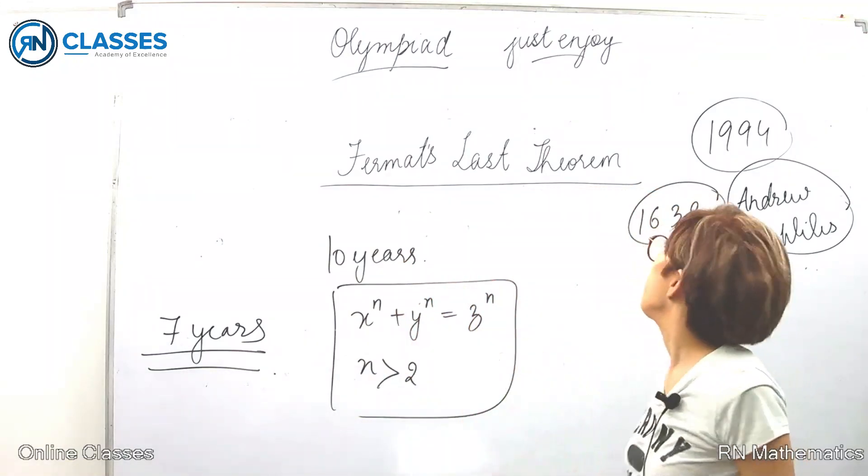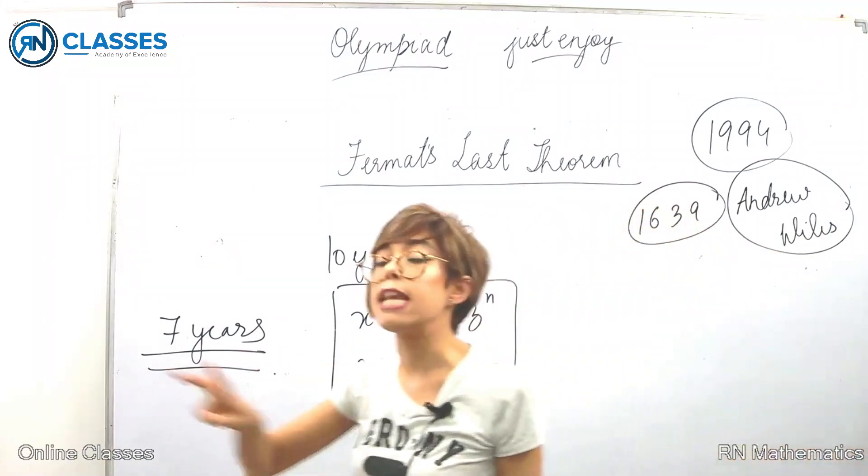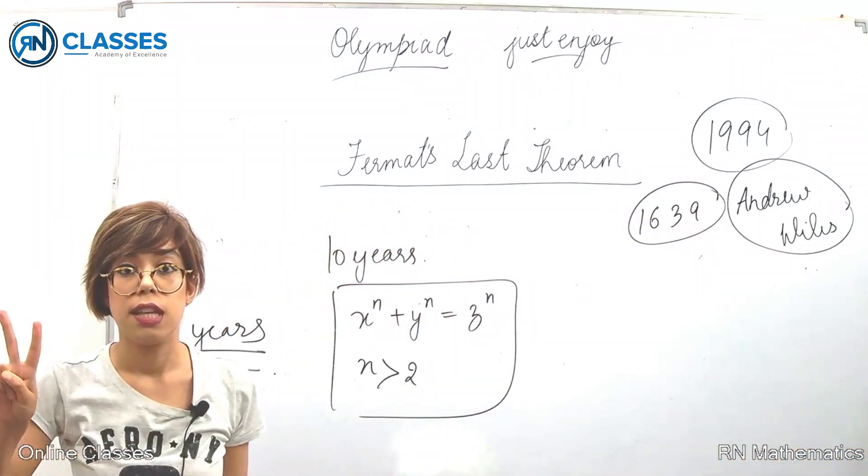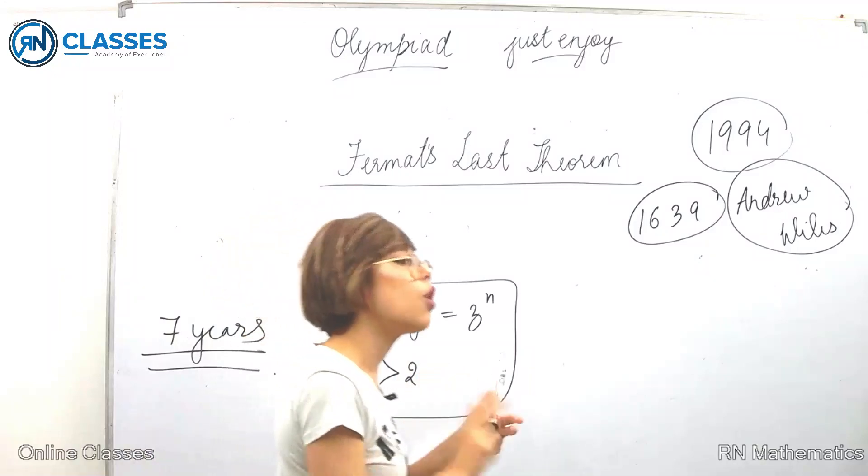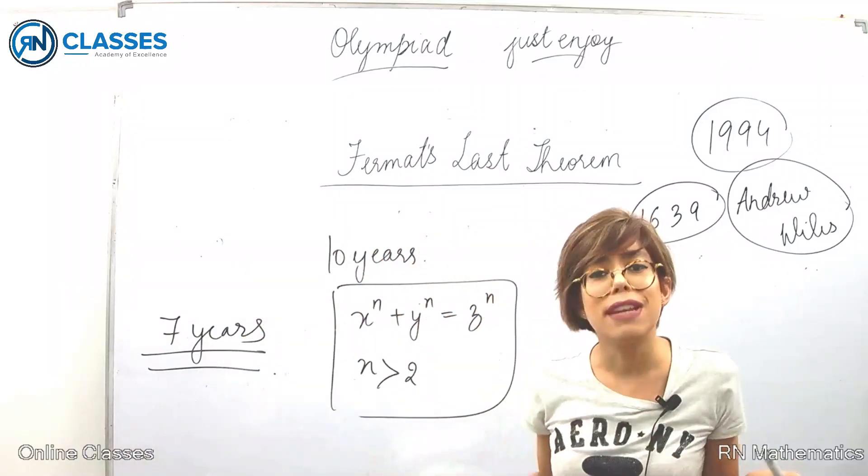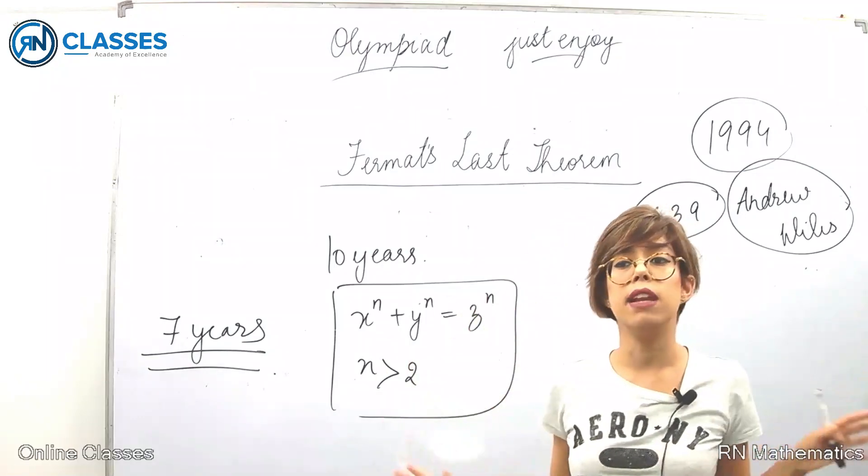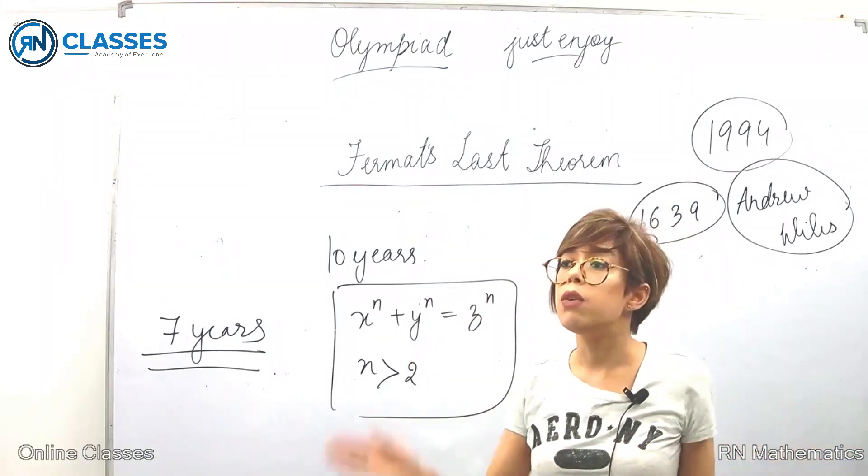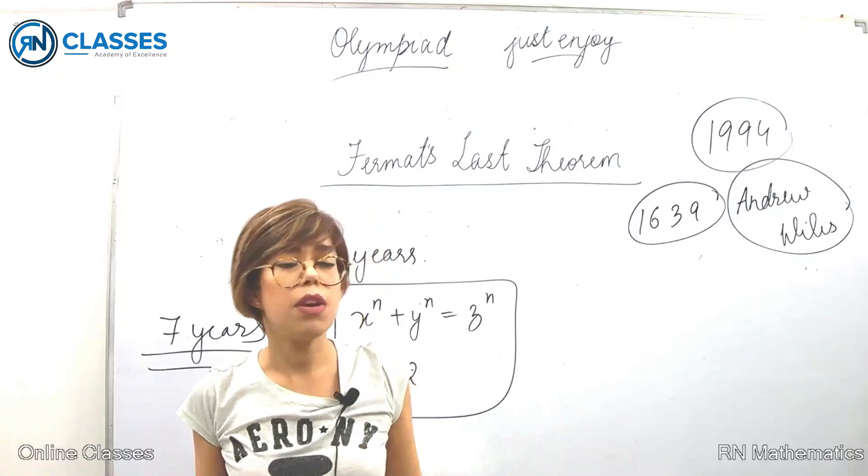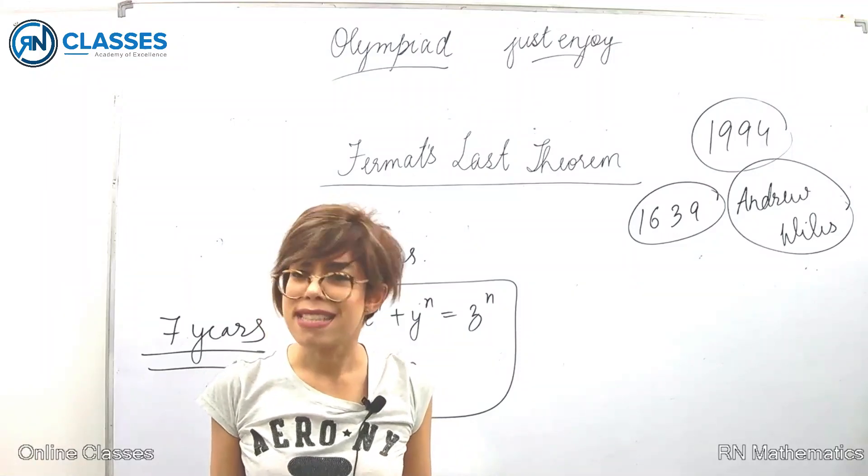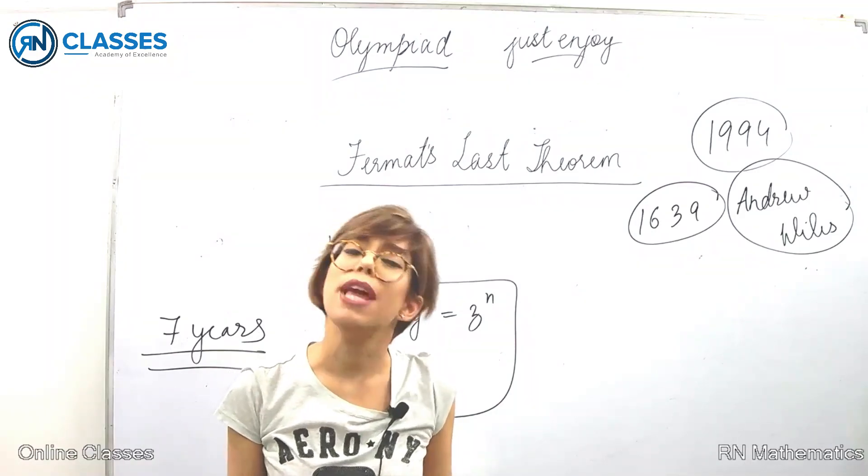That's the second thing we should pay heed to from Andrew Wiles' life. First, perseverance. Second, the importance of good education, which is to learn how to think. In this rat race, we sometimes forget why we are studying. We are not trying to get marks. I don't care about your marks or whether you get good marks in school. Our aim in life is to get good education.